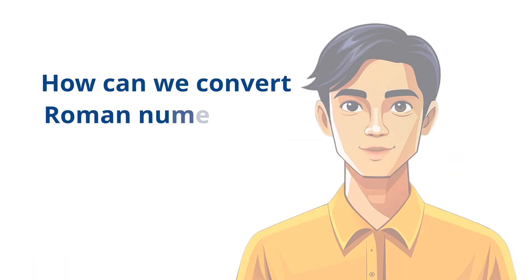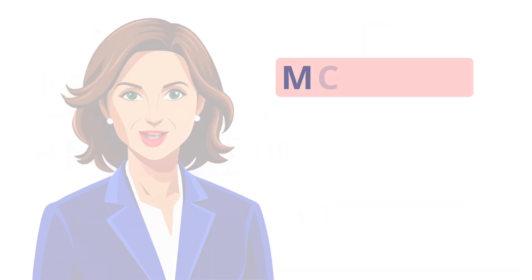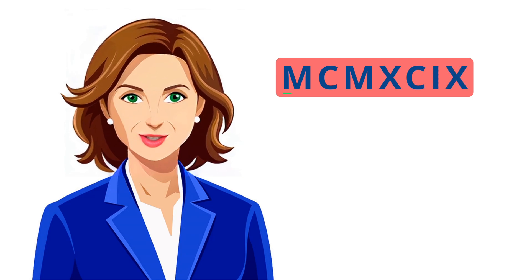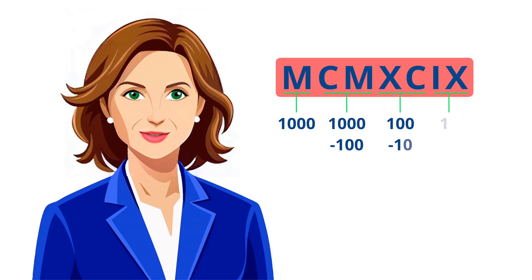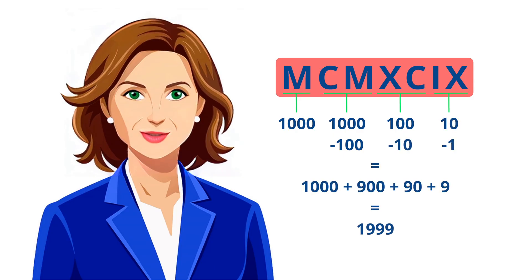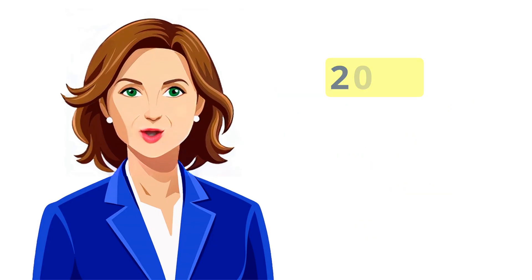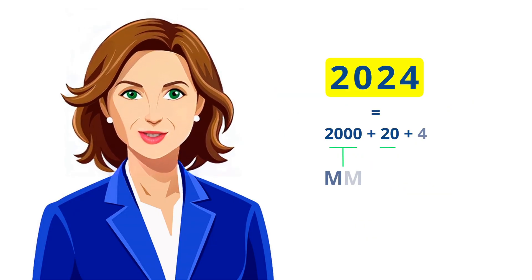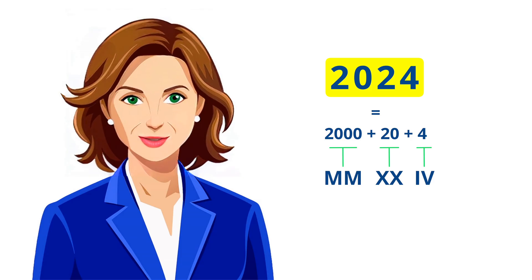How can we convert Roman numerals to regular numbers and vice versa? To convert Roman numerals to standard numbers, add or subtract each symbol's value according to the rules. For converting from standard numbers to Roman numerals, break the number into thousands, hundreds, tens, and ones, then match each part with its Roman numeral.